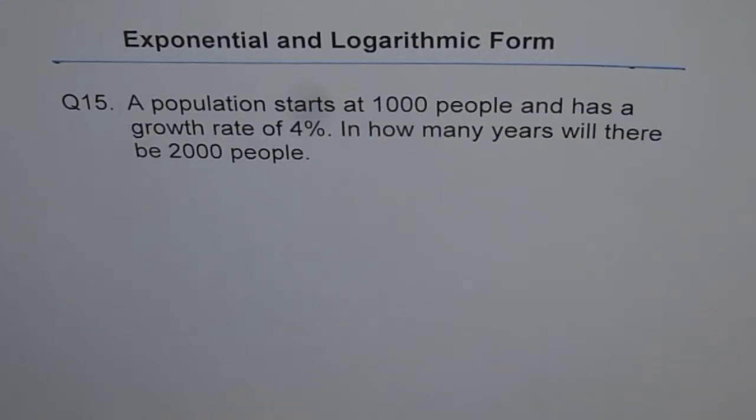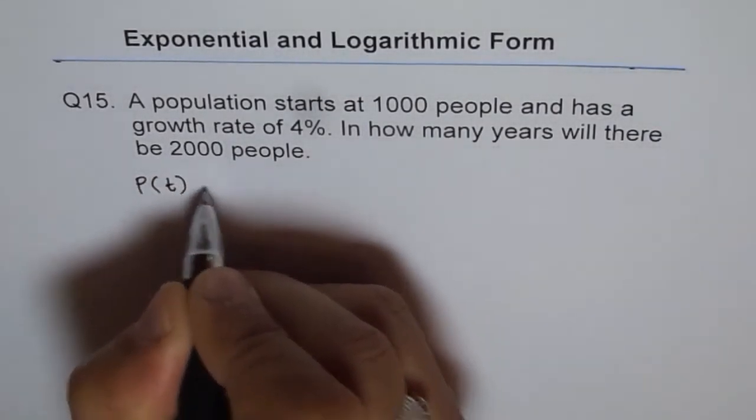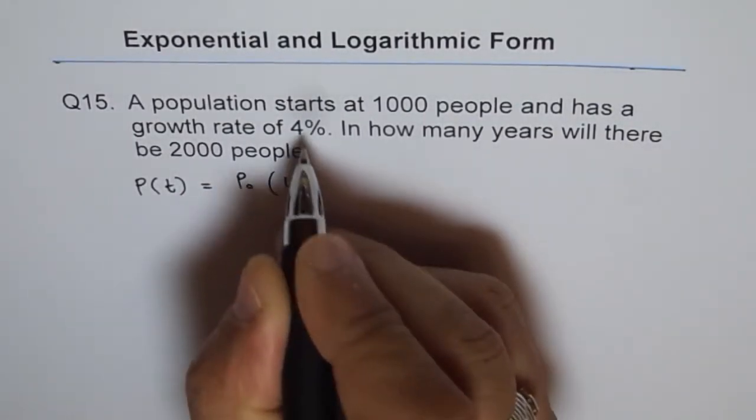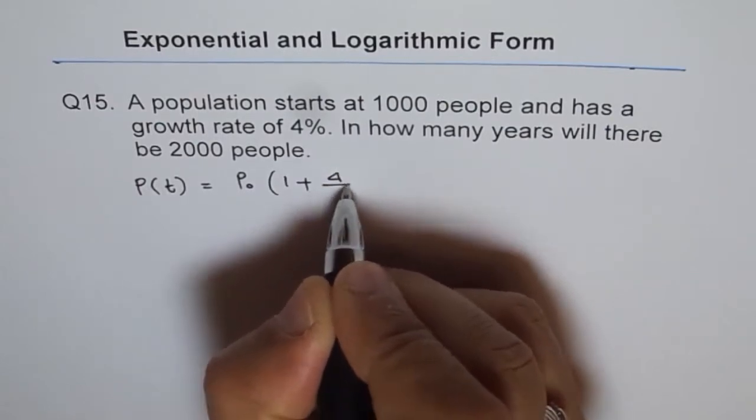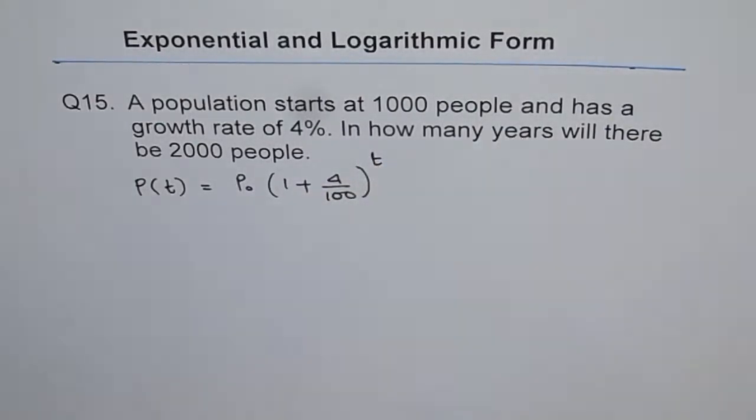It is an exponential growth. So we can write the formula like population at any instance of time is equal to initial population times 1 plus growth rate, which is 4%, to the power of t. So that is how we get the equation.